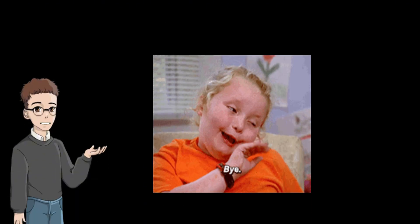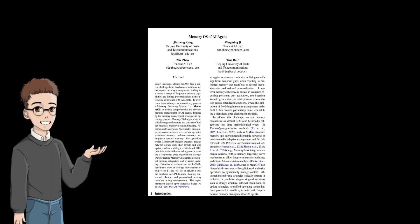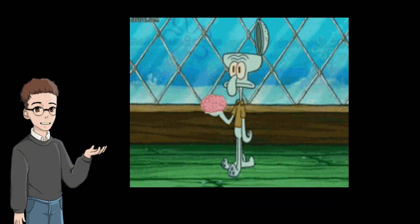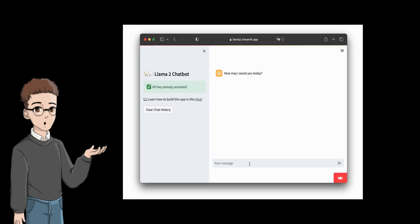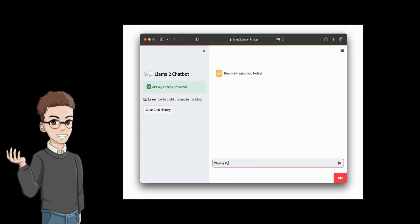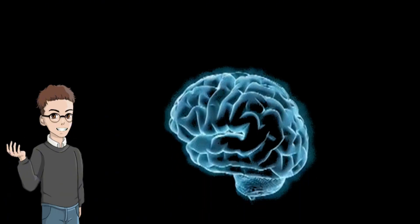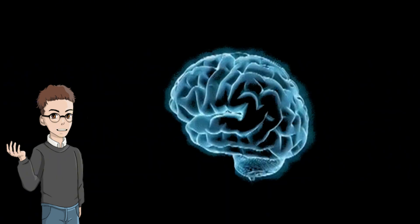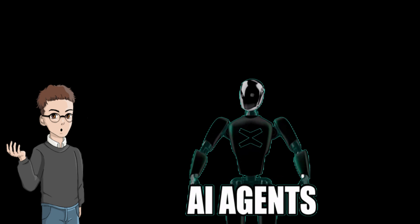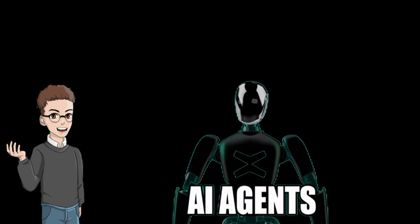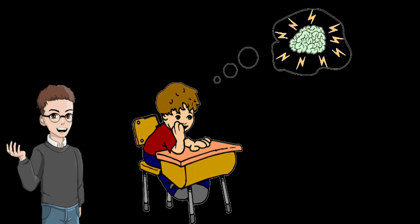Say goodbye to goldfish brains and hello to smarter AI companions. MemoryOS MCP is like giving AI agents a powerful memory plug-in. It solves the common forgetfulness problem of AI, allowing them to better understand context, maintain state, and handle complex tasks. With the support of this super memory, the AI agent of the future will no longer be just a flash of intelligence, but a truly reliable, intelligent partner that can continuously learn, remember us, and establish deeper interactions with us.